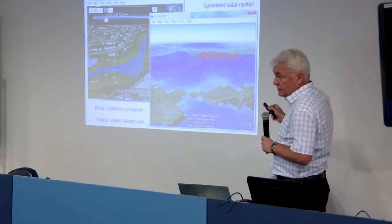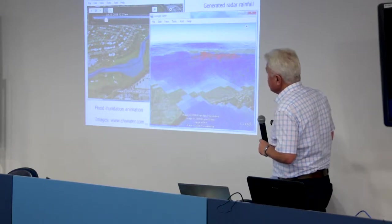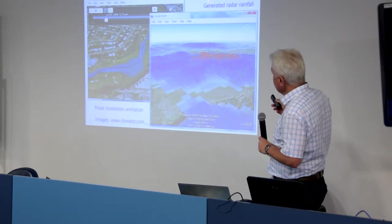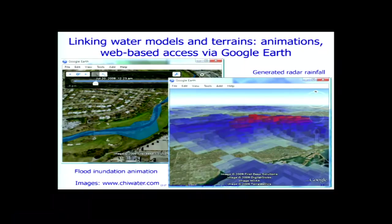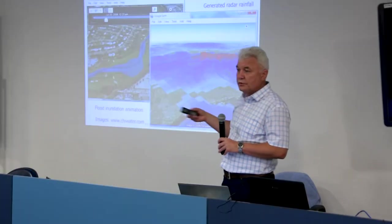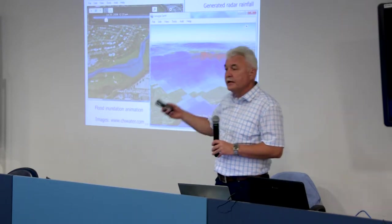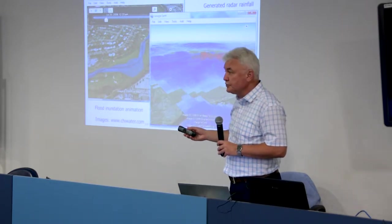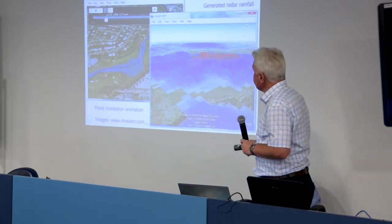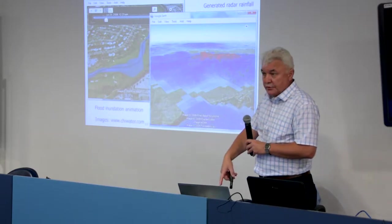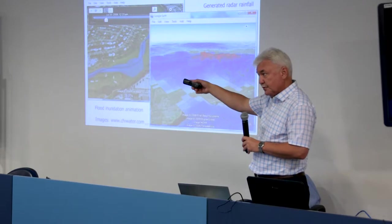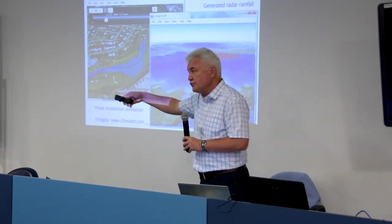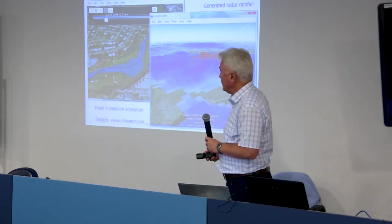One of the trends nowadays, and maybe last 10, 15 years, is to link results of modeling to visualization tools. In this case, for example, Google Earth is used to visualize results of modeling. So it's, in a way, GIS, Geographical Information System, where you integrate different layers with a lot of different information.